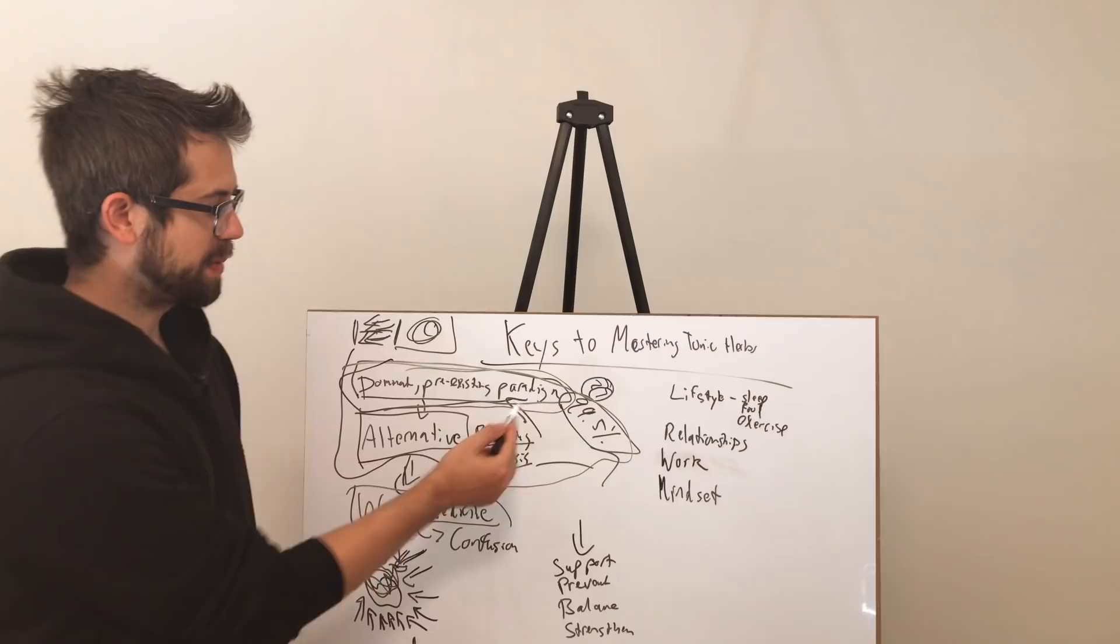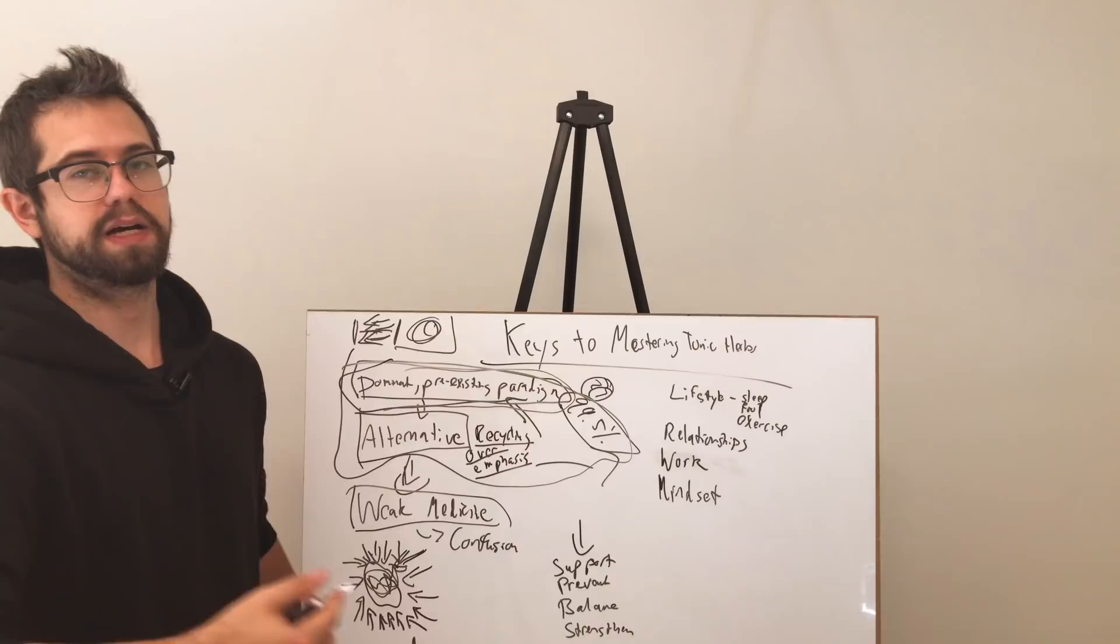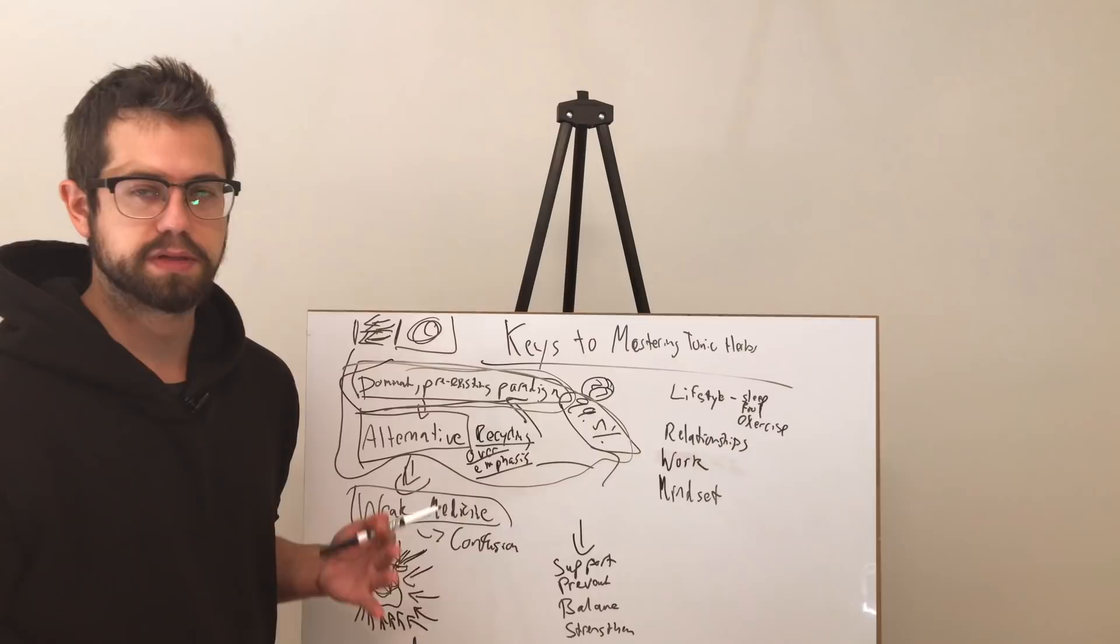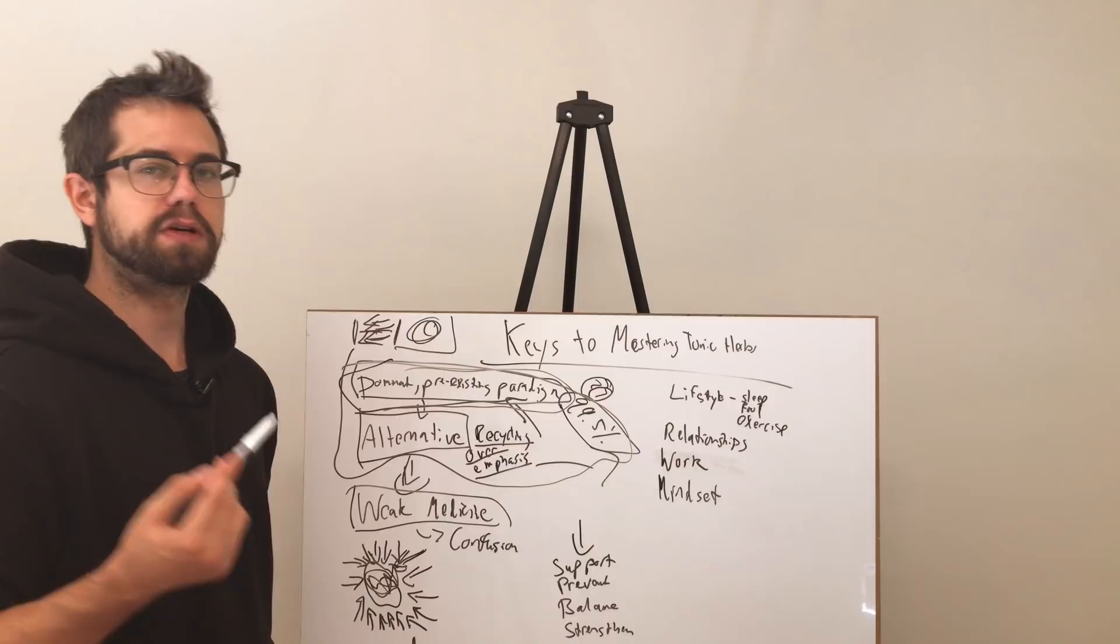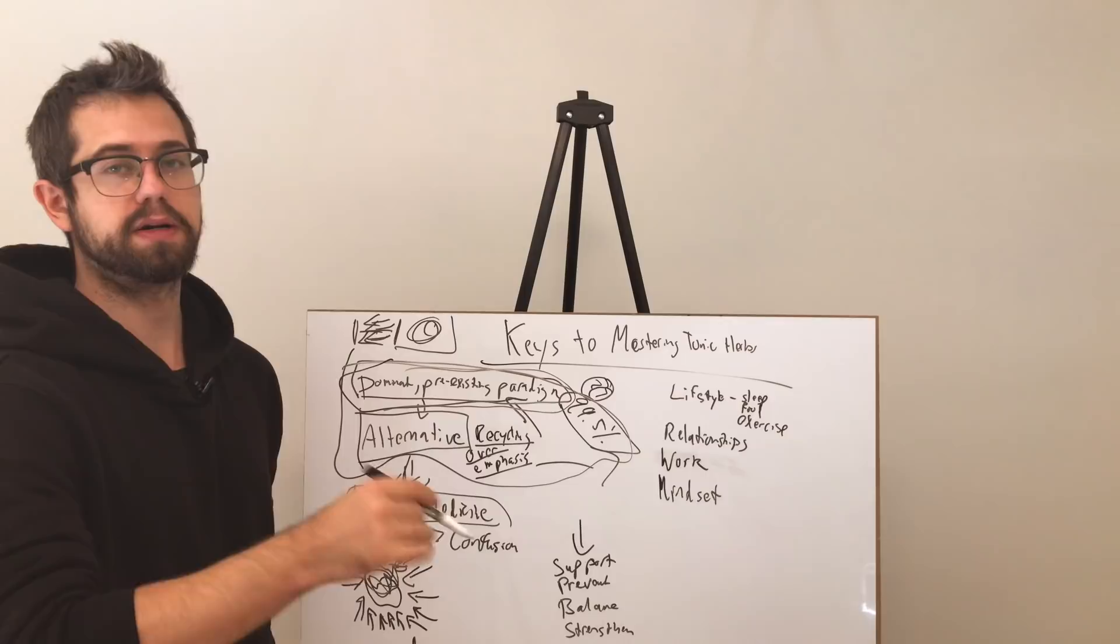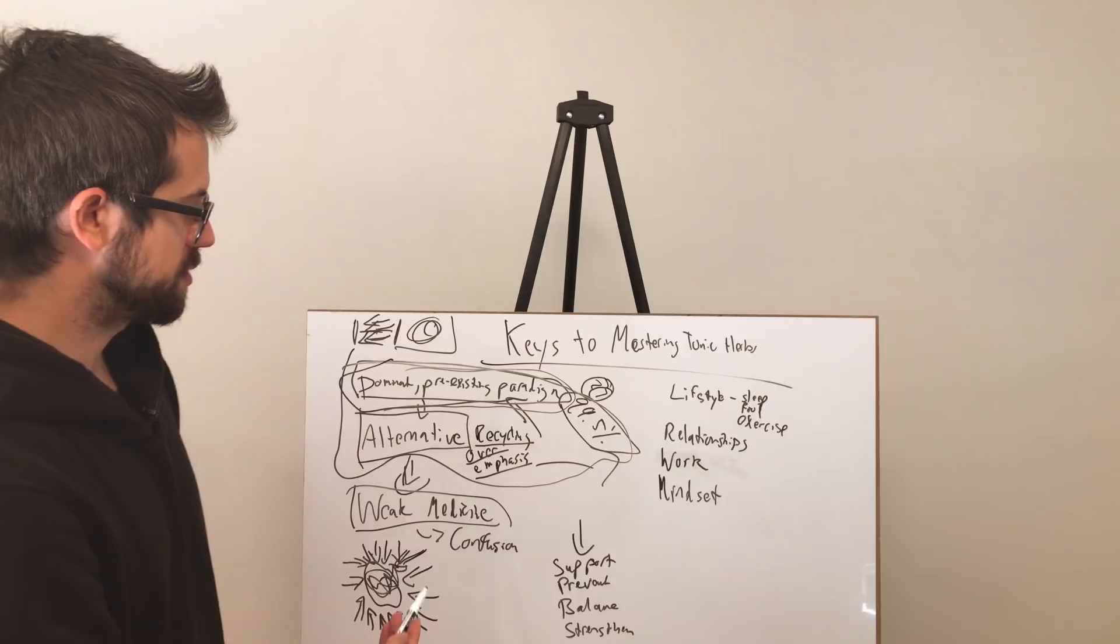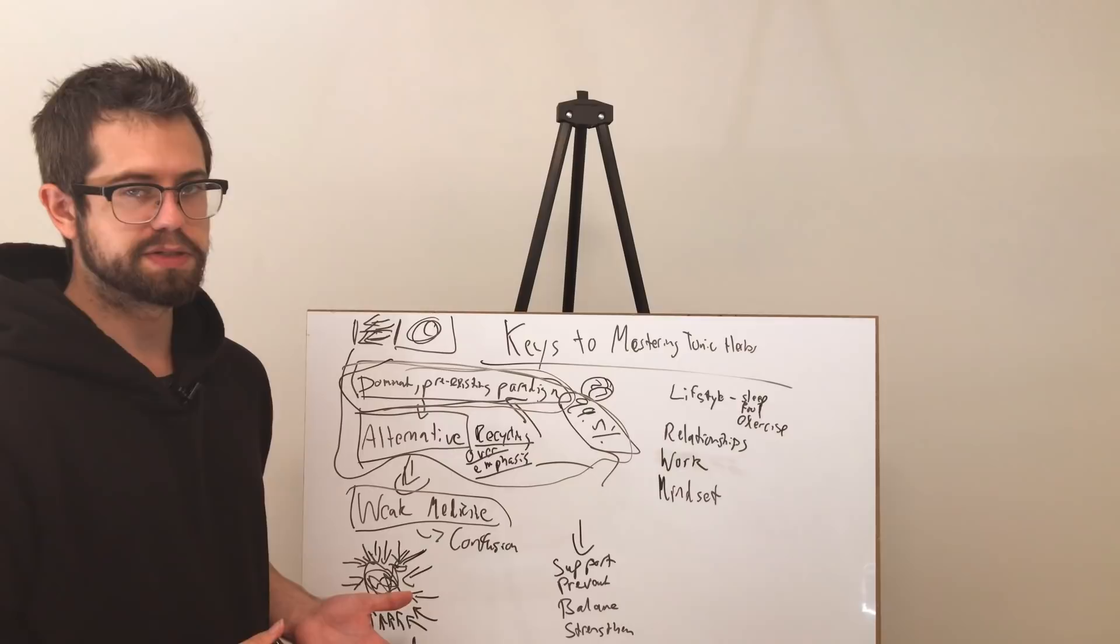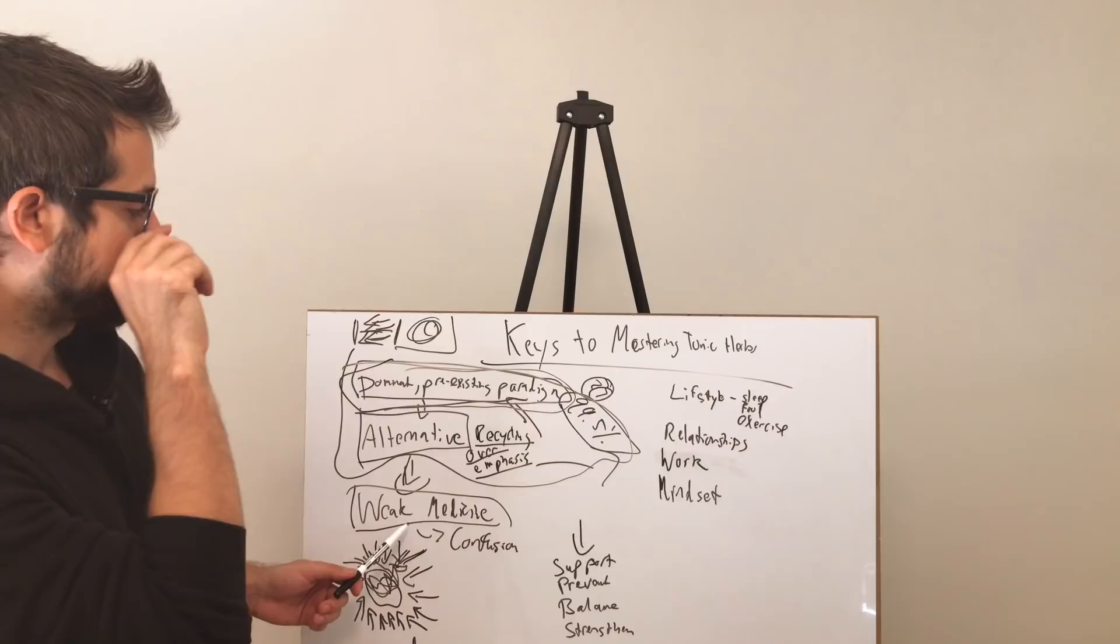We keep chasing it endlessly rather than identifying what it actually is, addressing it in a clear and direct way, and then moving on to a different level of functioning. But it's not really possible within these preexisting paradigms. How this relates to tonic herbs is important because people will operate from this thing and want to throw tonic herbs in the mix, which is great. Herbs can be very helpful.